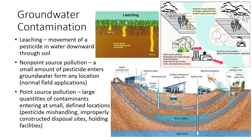Groundwater contamination occurs in various ways. Pesticides contaminate groundwater through direct entry and by leaching through soil. Direct entry includes any opening in the soil that allows water or contaminants to bypass the soil's natural filtration process, such as plant roots, burrows, abandoned wells, etc. Spilling pesticides near a well, pumping water into pesticide application equipment without using air gaps or backflow prevention devices, and injecting pesticides into an irrigation system without a backflow prevention device can cause groundwater contamination. Leaching is the movement of a pesticide in water downward through the soil, and it occurs as rainwater or irrigation water percolates through the soil, carrying water-soluble pesticides with it.